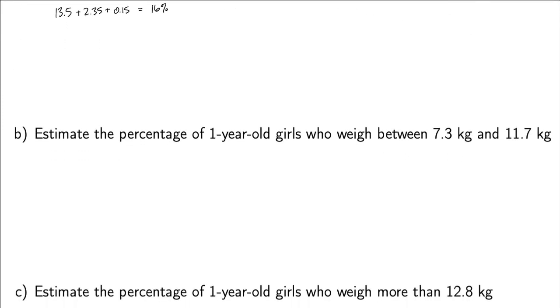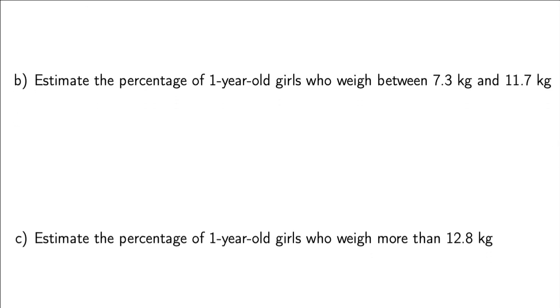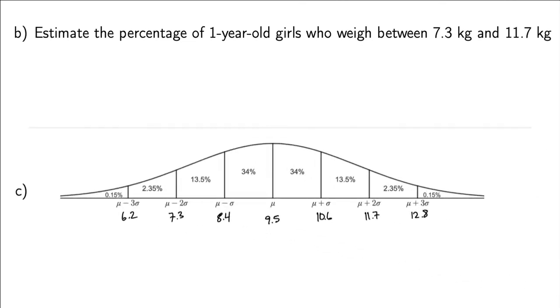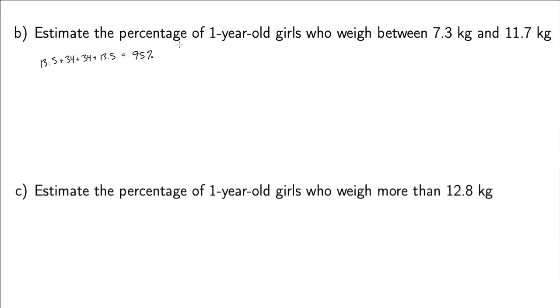And then we can go down. Let's go to the next thing. I want to estimate the percentage of one year old girls who weigh between 7.3 kilograms and 11.7. So I just go to my chart again. And I look at 7.3. And it's right there. And 11.7 is right there. And I just kind of add up all those percentages. Notice that that's actually between 2 less than and 2 greater than. So I know that's within two standard deviations of my mean. I know that's 95. But if you don't remember that, you just add them all up from your chart. So 13.5 plus 34 plus 34 plus 13.5. And that gives you 95 percent.